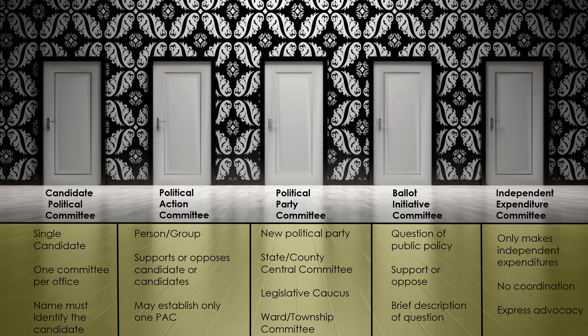Political action committees may be established by any person or group other than a candidate or party to support or oppose a candidate or candidates. The name of the political action committee must include the name of the group or individuals responsible for its formation, unless the committee is to support multiple candidates, in which case it must contain the jurisdiction the candidates are running in and the offices that are being sought. Additionally, a candidate cannot form both a candidate committee and a political action committee to support their own candidacy. A particular person or group can only establish one political action committee at any given time, unless the other committee is an independent expenditure committee.